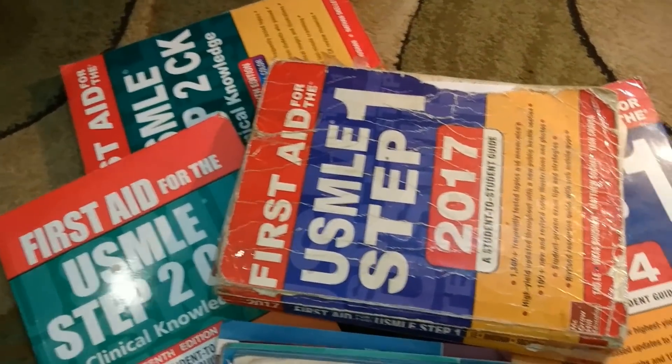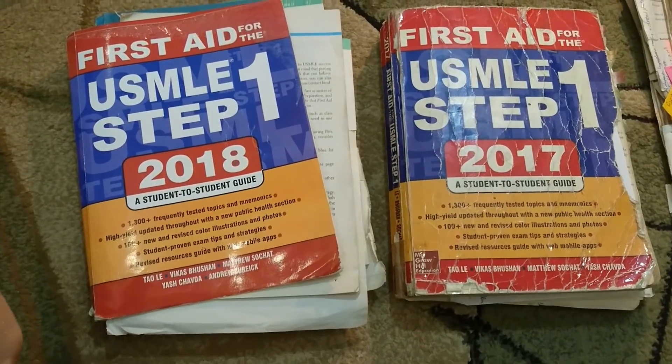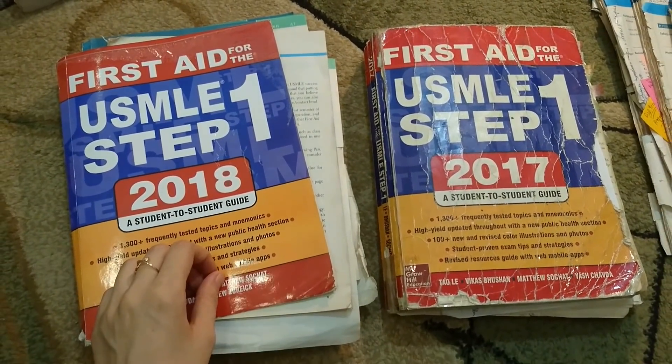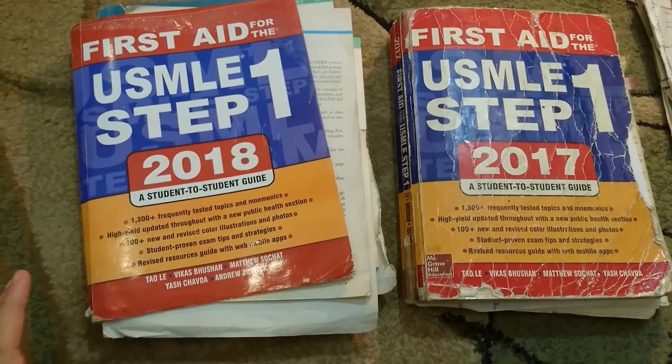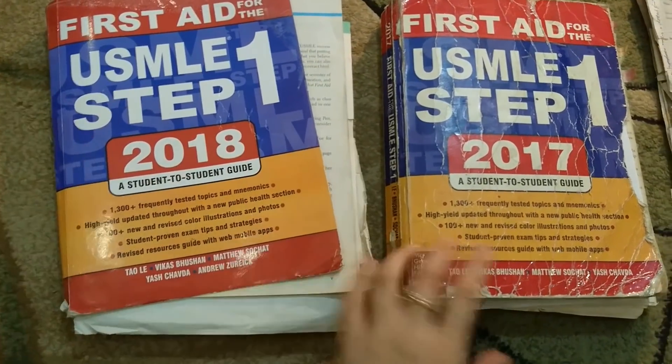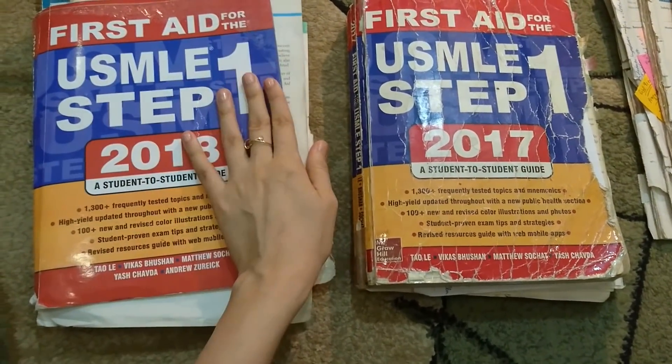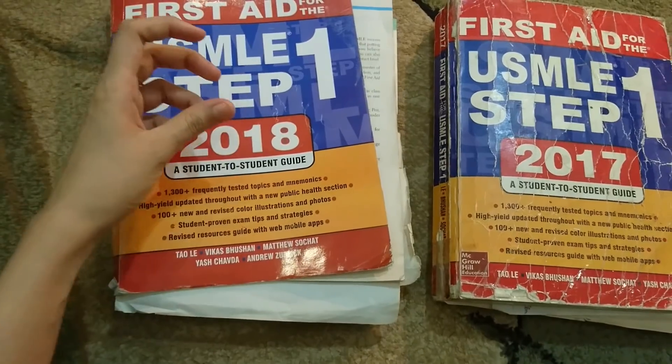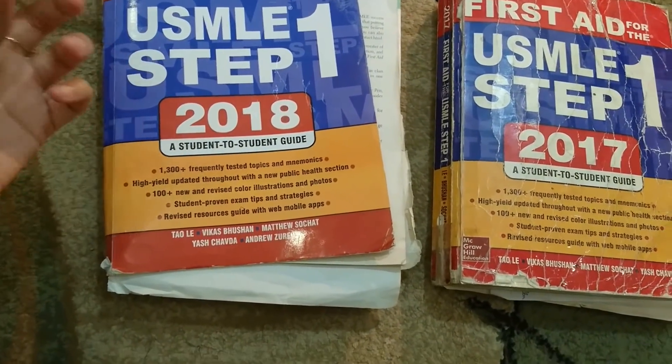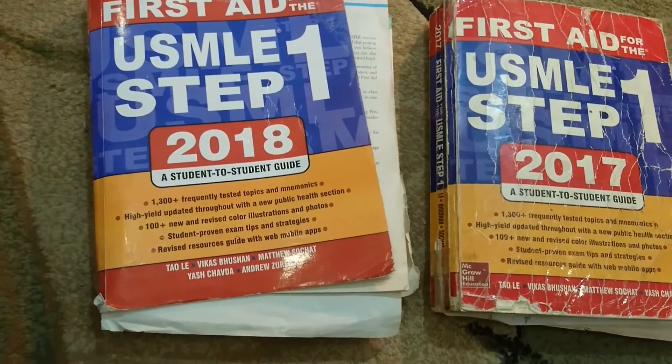So let's get started. As most of you already know, First Aid is notorious for having poor binding, which is why I recommend that when you get your first First Aid, get a spiral binding done, which I obviously haven't. How that helps is that it would prevent your pages from falling down. Alternatively what you can do is that you can divide your book into different chapters and you can make a different spiral binding for each chapter that helps you keep track of the number of chapters that you're done with and the number that are remaining.